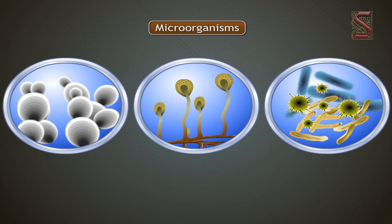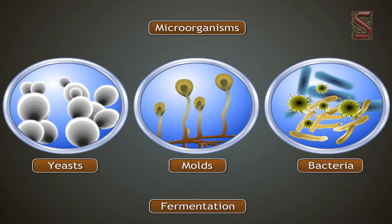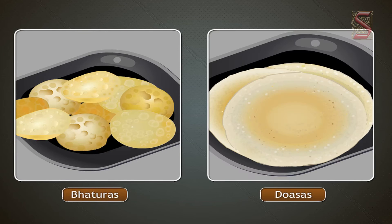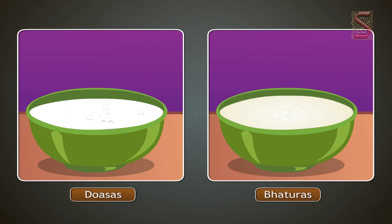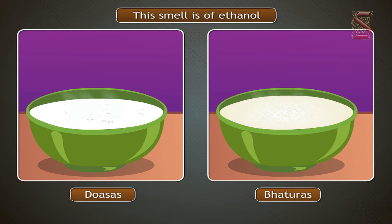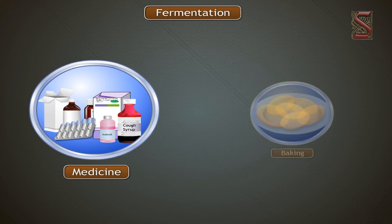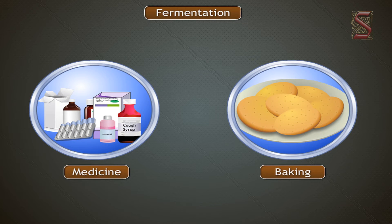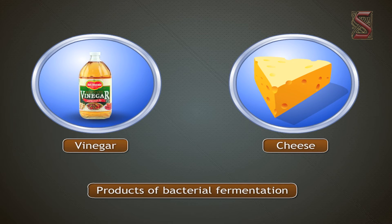Various microorganisms including yeasts, certain molds, and bacteria obtain their energy through fermentation. The bhaturas and dosas made at home are also a product of fermentation. If we leave the dosa or bhatura dough in the open for some time, a characteristic smell starts coming out — this smell is of ethanol. Many fermentation processes result in products important in medicine and food preparation like baking. Antibiotics are obtained from both bacterial and mold fermentation. Vinegar and cheese are products of bacterial fermentation.